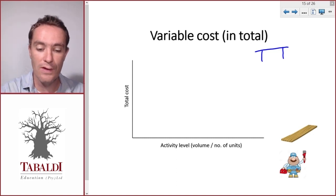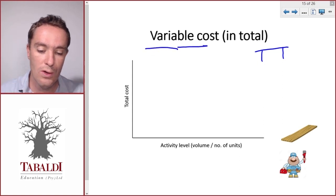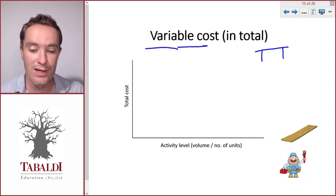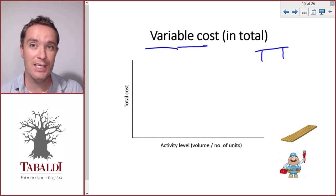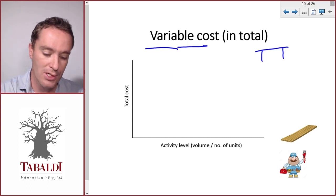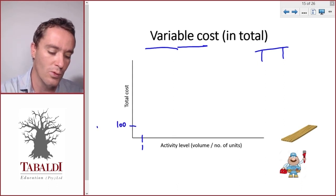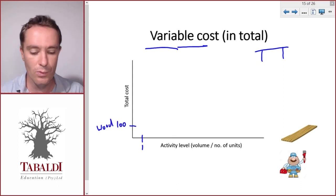That is called a variable cost, or a cost that varies. But it varies in a very specific way. So let's plot this on a graph. When we make one table it might cost us a hundred for wood, so we'll only look at the wood in this example.